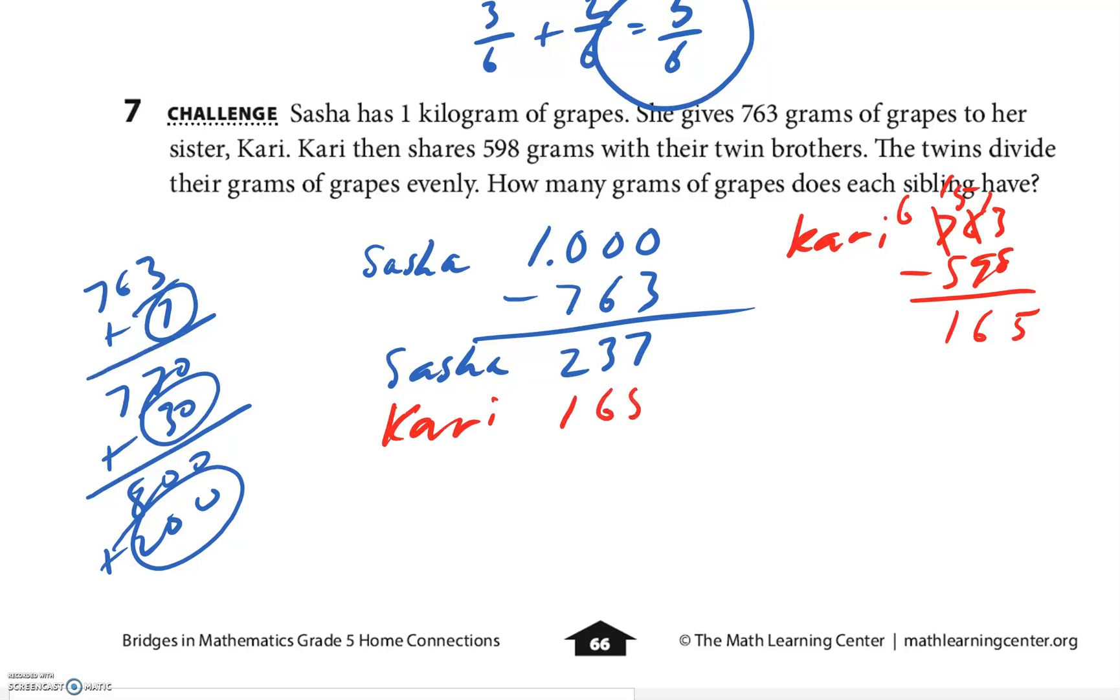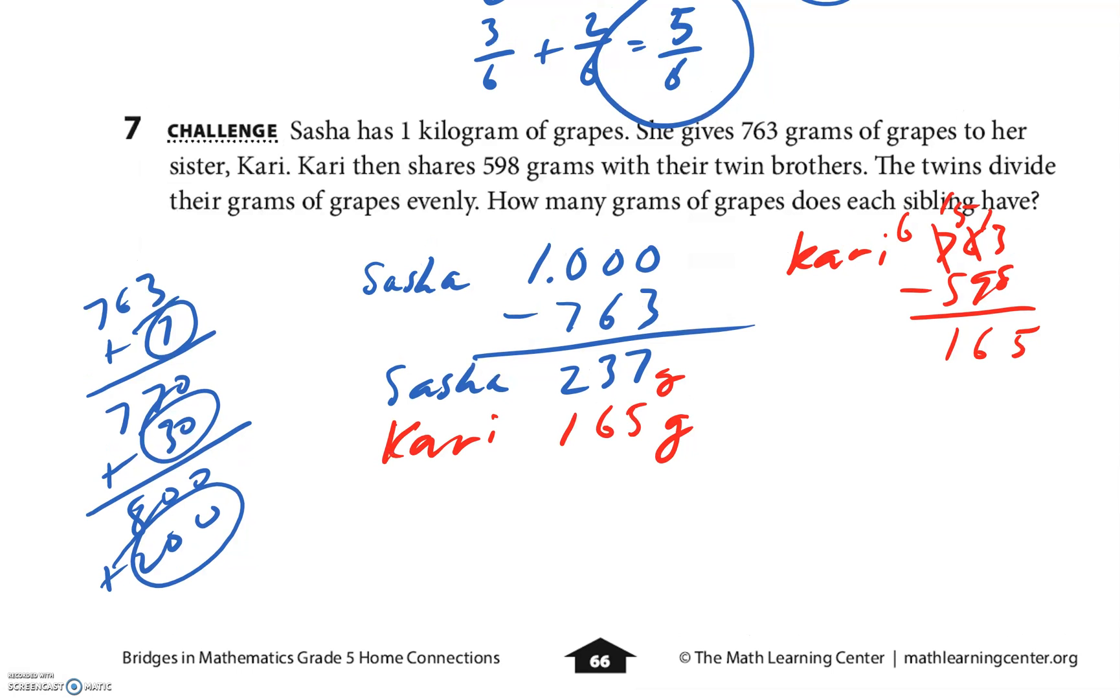So the twin brothers, they have 598 divided by 2. Watch this though, 600 divided by 2, well that's 300, right? But that's 1 off for each of them, minus 1 is 299. I think each brother, brother 1 and brother 2, they each have 299 grams.